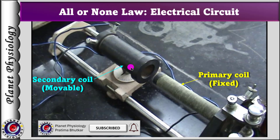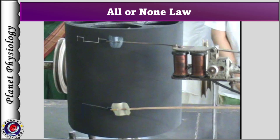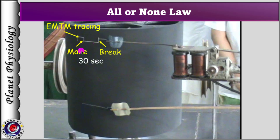When the coils are parallel, current strength is maximum at the given distance. If the coils are perpendicular, no current is induced in the secondary coil. Once the setup is ready, the secondary coil is moved to the maximum distance, meaning we start the experiment with the minimum strength of stimulus. The ventricle is stimulated first by make shock and then by the brake shock. The downstroke of the EMTM tracing indicates delivery of make shock, whereas the upstroke indicates brake shock.